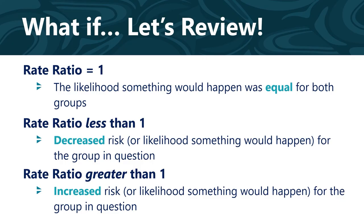What if your rate ratio is one? That means that the risk or likelihood that something would happen was equal for both groups. If it's less than one, as in the mining example, there was decreased risk or likelihood that something would happen for the group in question. If it's greater than one, as in the quitting smoking example, there was increased risk or likelihood that something would happen for the group in question.